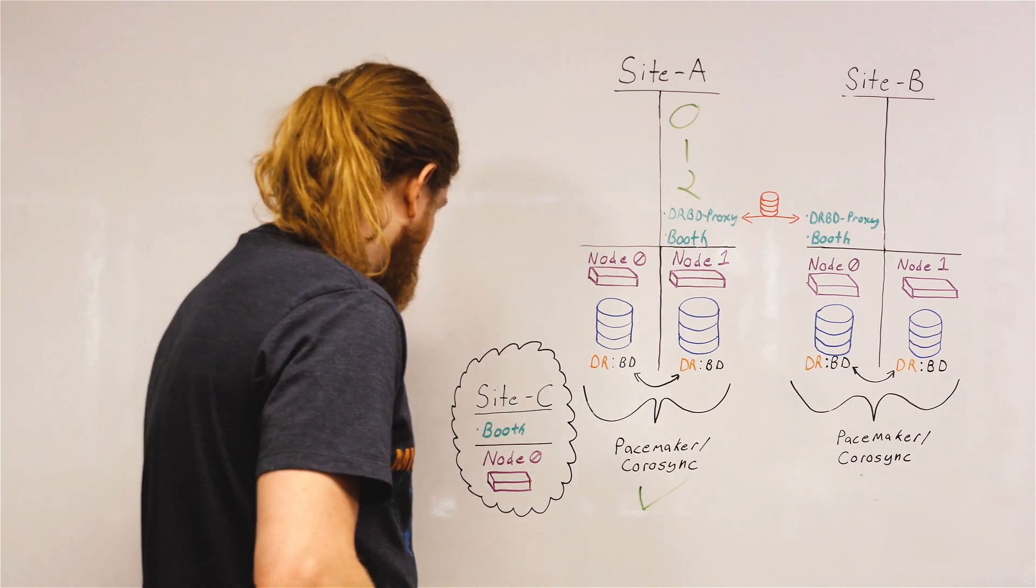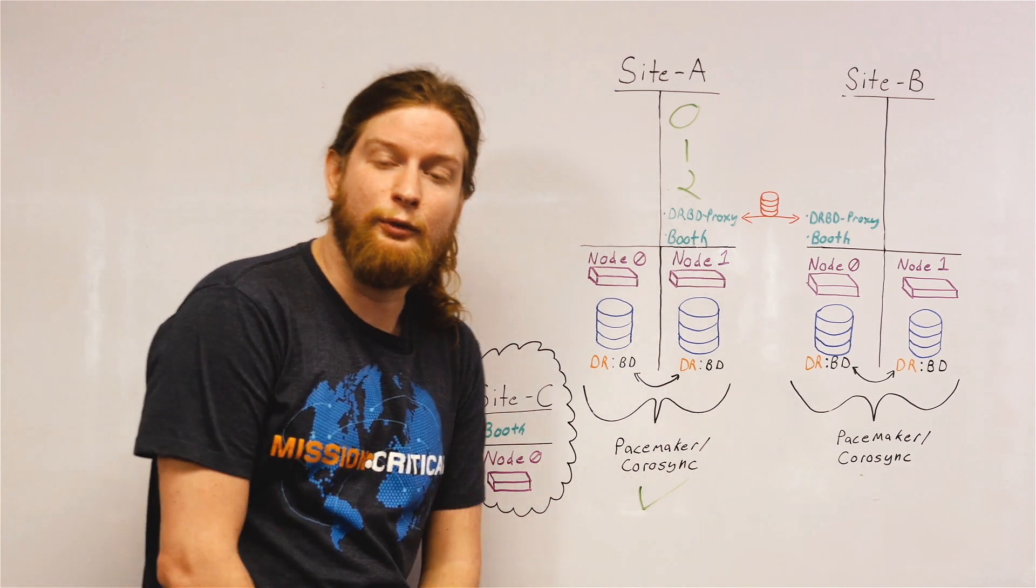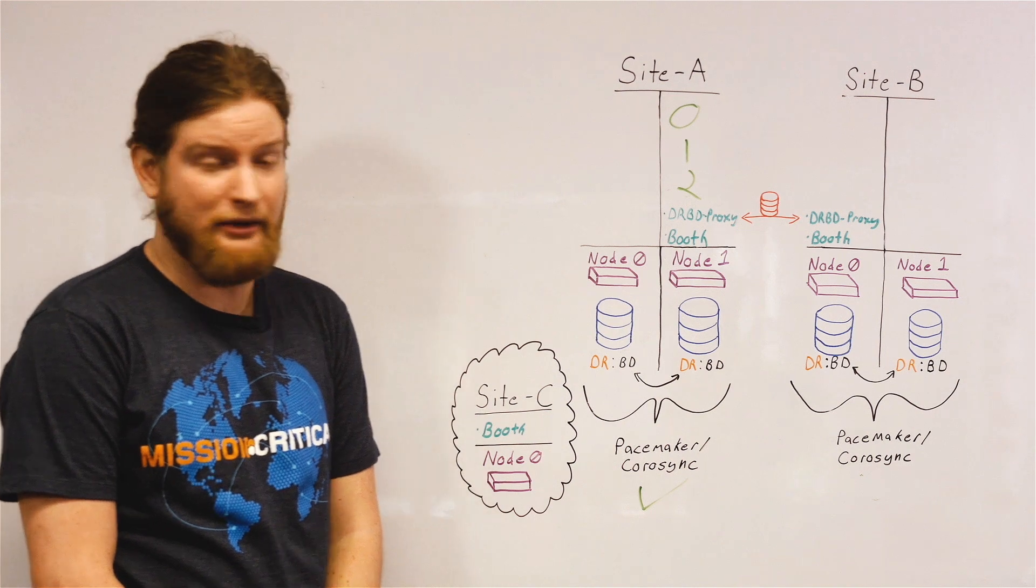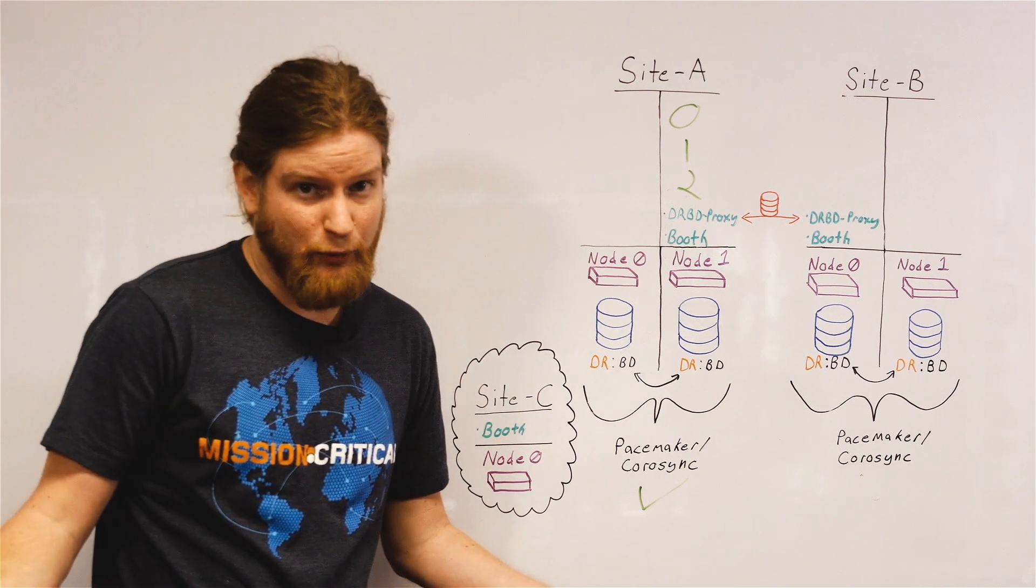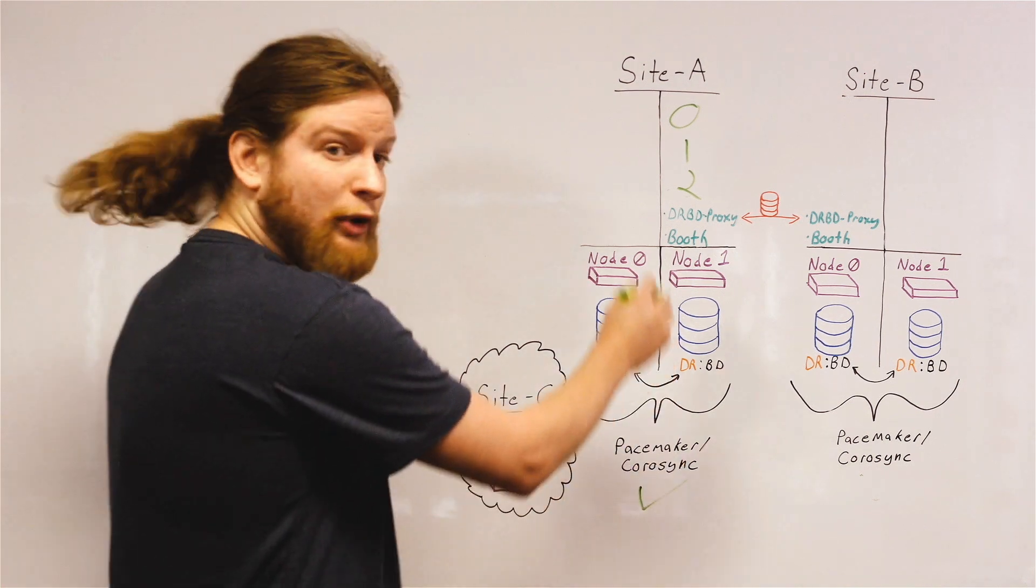So it's a way to tell local high availability clusters whether they're allowed to run services or not. It doesn't replicate data. Booth doesn't do that. But DRBD proxy does.